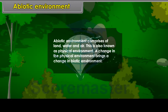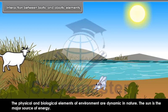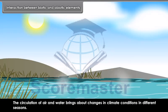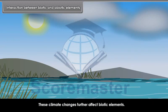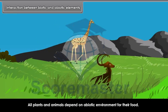Interaction between biotic and abiotic elements. The physical and biological elements of environment are dynamic in nature. The sun is the major source of energy. All changes in the abiotic environment are powered by solar energy. The circulation of air and water brings about changes in climate conditions in different seasons. These climate changes further affect biotic elements. All plants and animals depend on the abiotic environment for their food. All plants obtain their food directly from land, water, air and the sun.